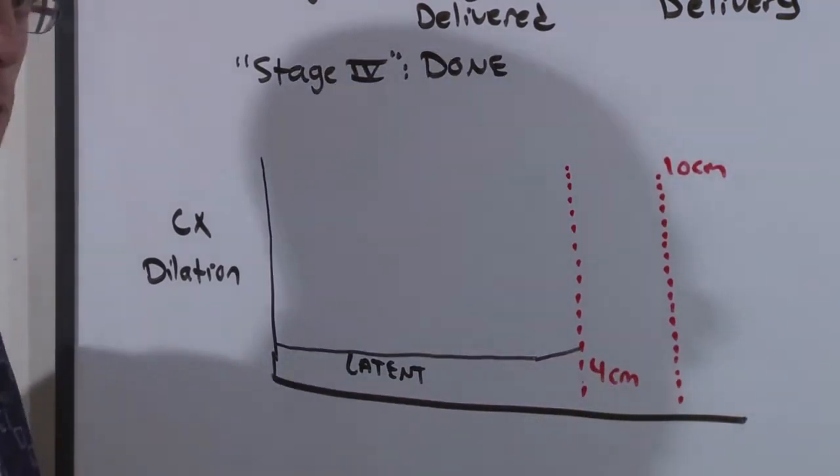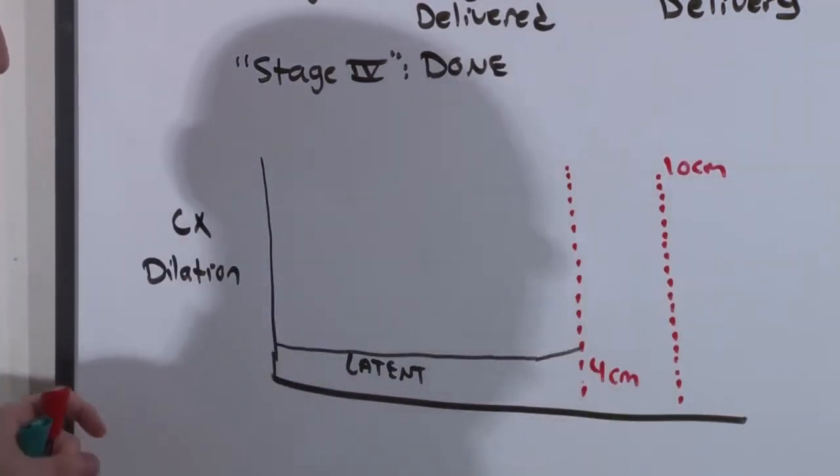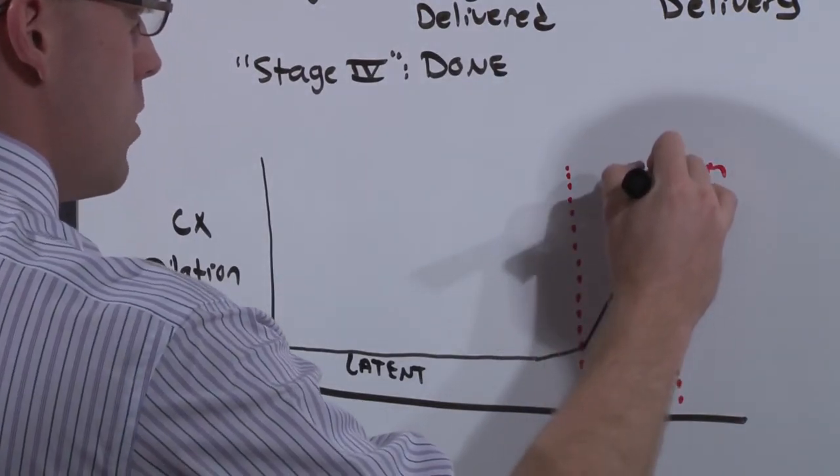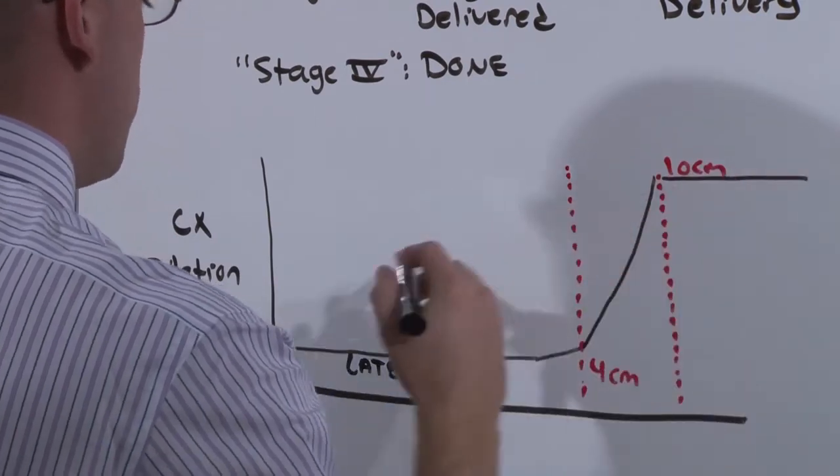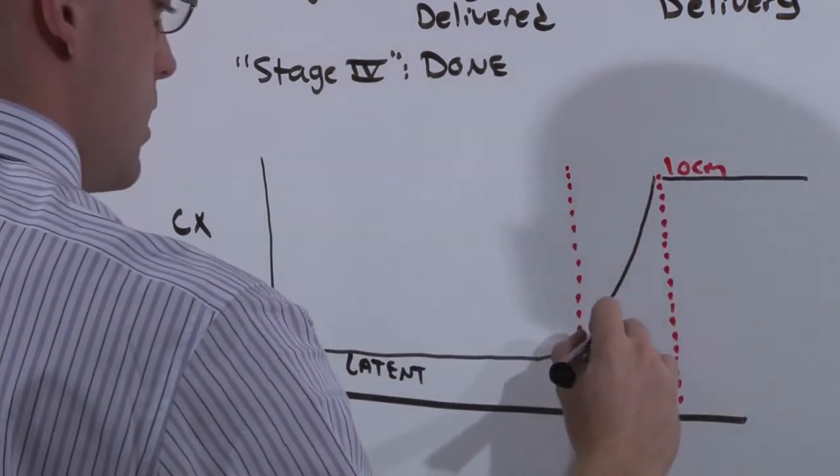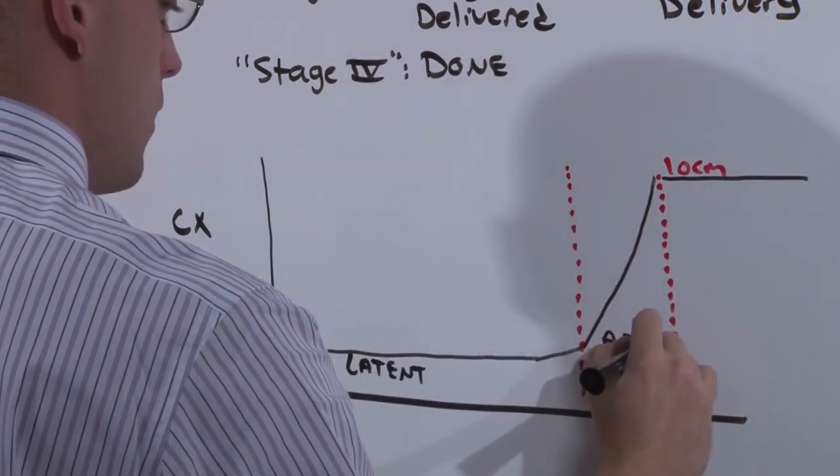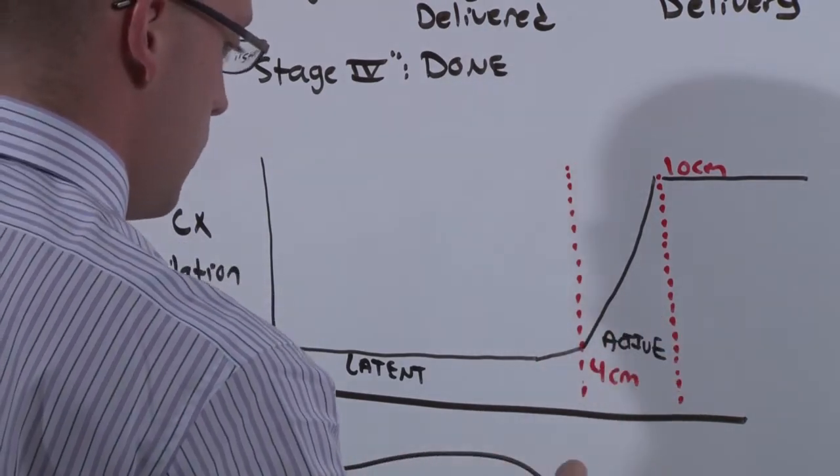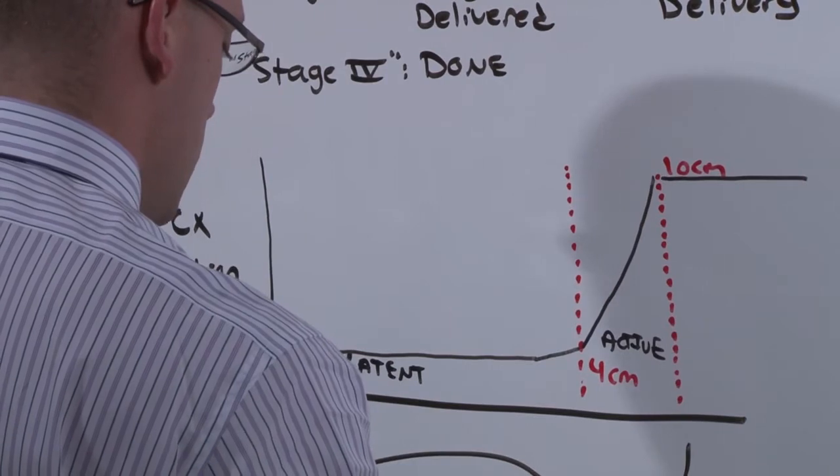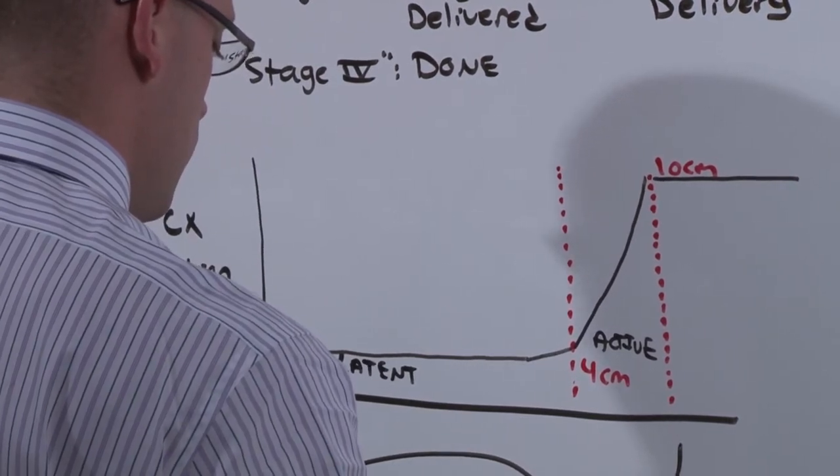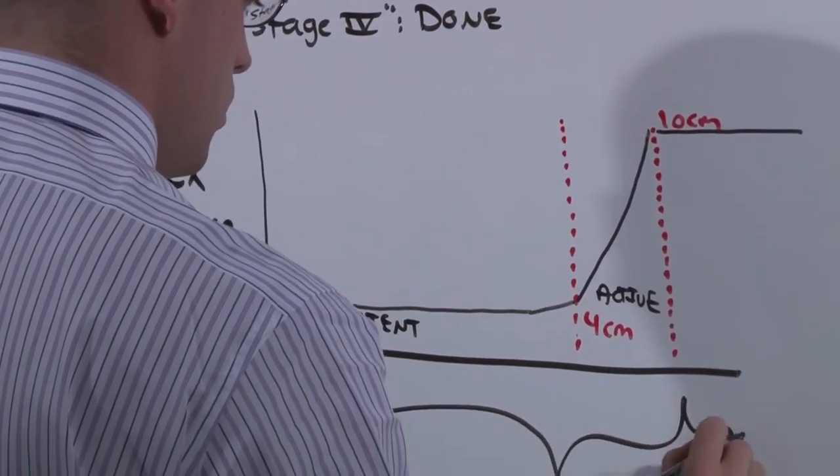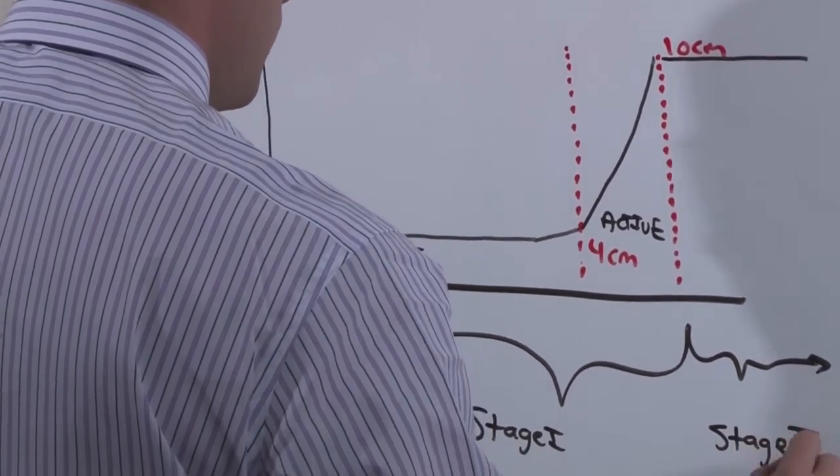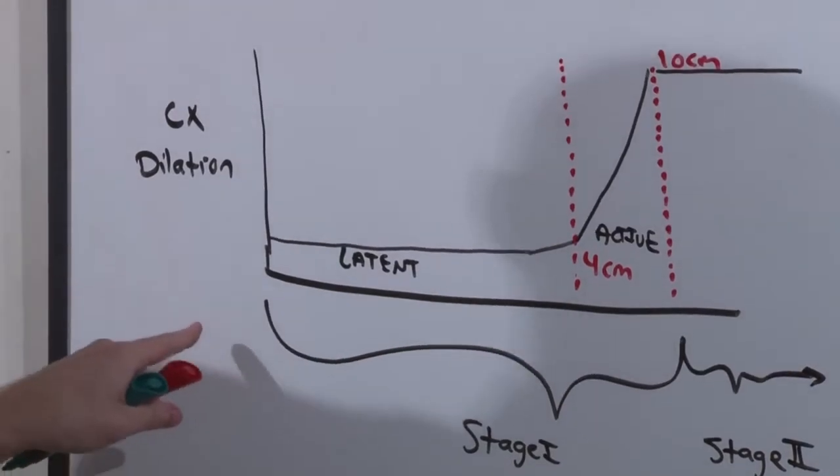And once it hits about 4 centimeters, a switch flips on, and all of a sudden dilation occurs at a very rapid rate and then will sustain at that level of duration. This is the active phase when that flip gets switched. Active and latent phase together is stage 1. Stage 2 continues on until baby is delivered. That was the stages of labor.